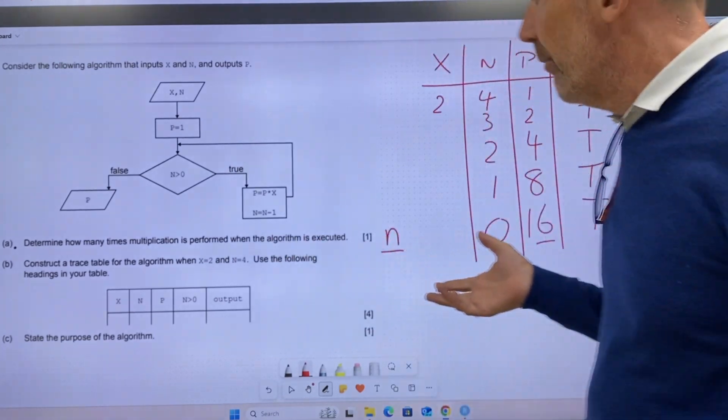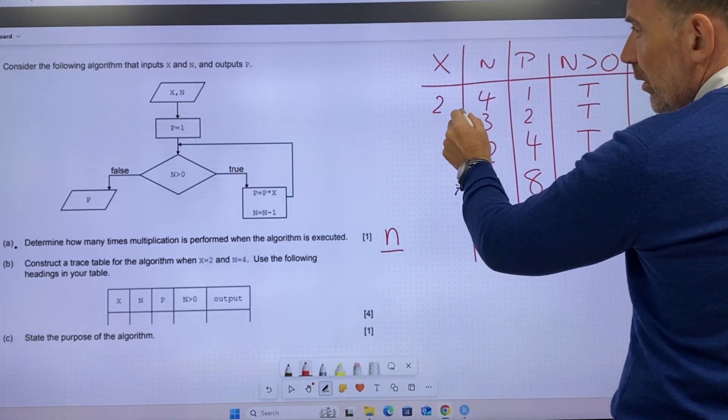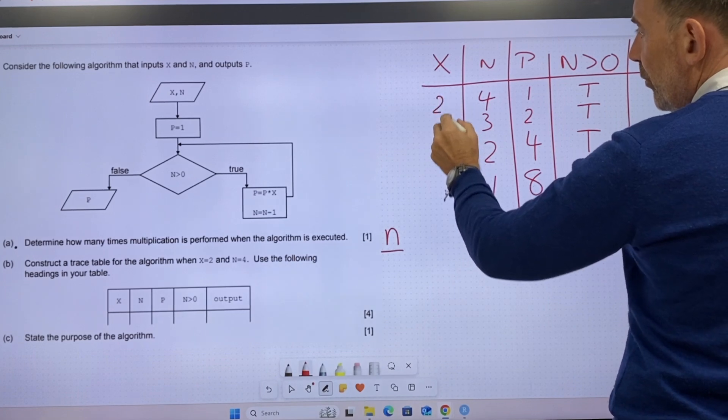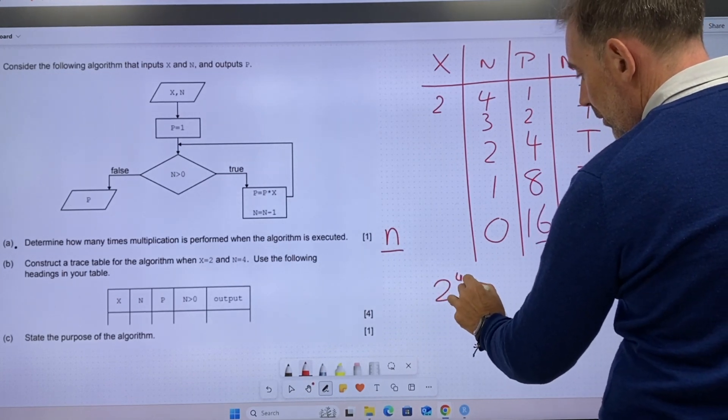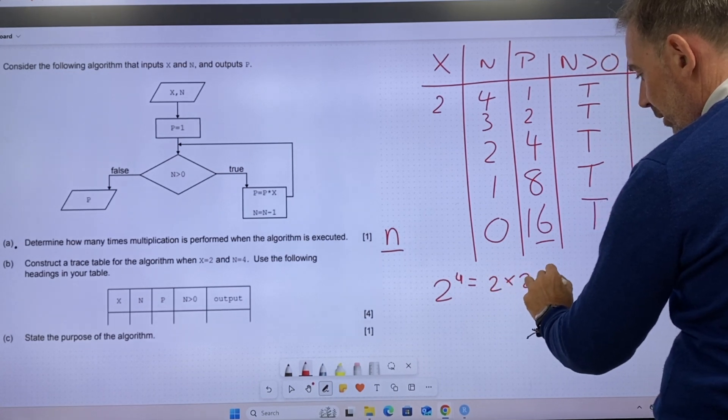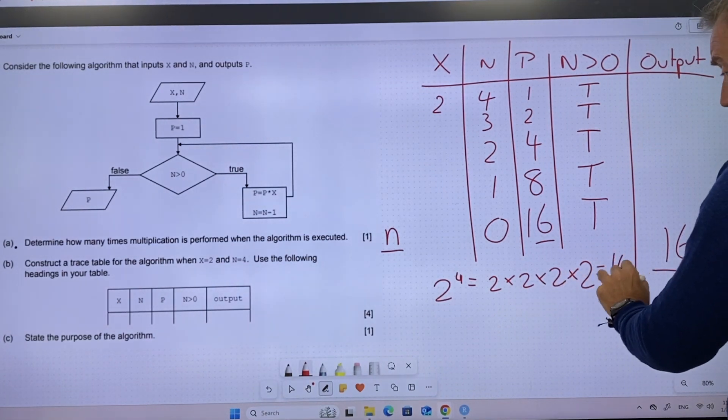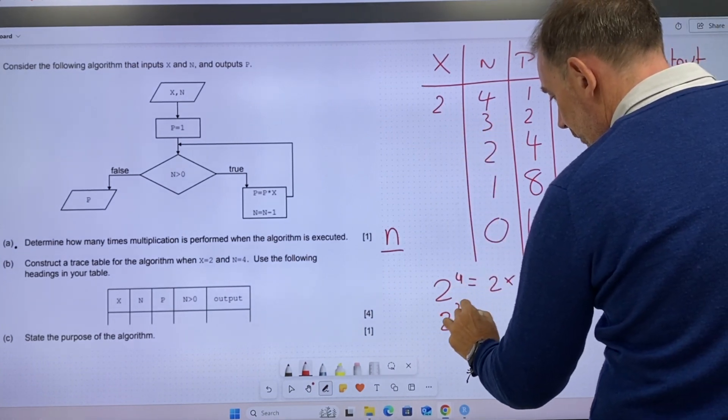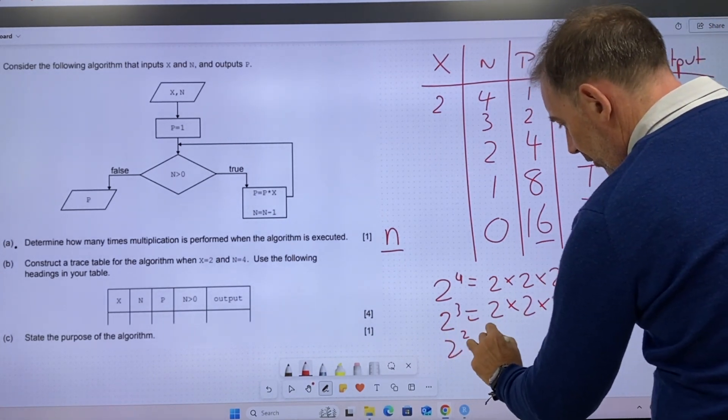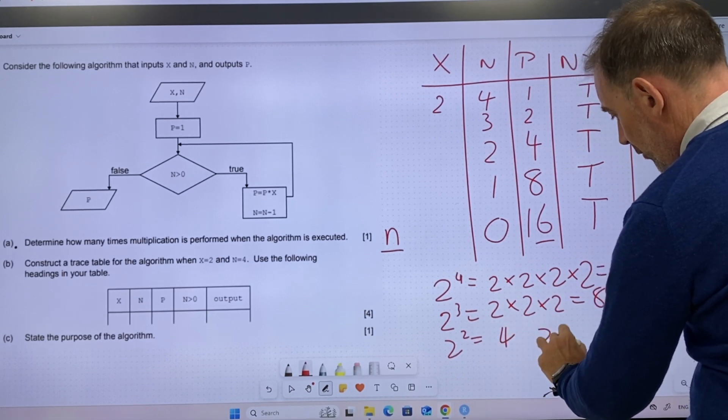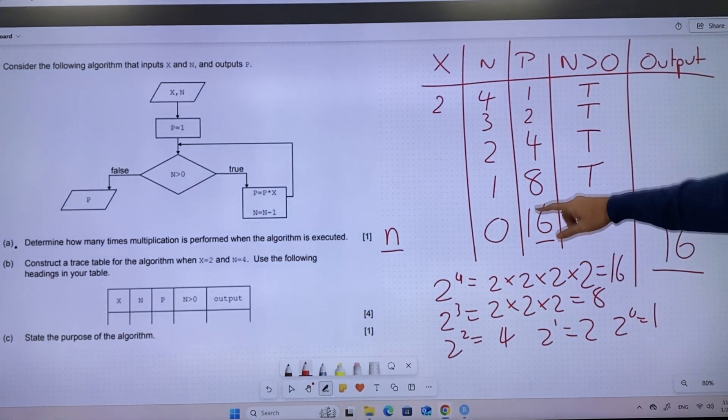So let's have a little look at this, because it's the state the purpose of the algorithm. Well, what's it doing? Well, looking at this, if we take this two value which we put in the beginning, two to the four, that would equal two times two times two times two, which would equal 16. Let's have a look at this. Two times three. Two times two times two would equal eight. Two to the two equals four. Two to the one equals two. Two to the zero equals one. So it's working backwards.